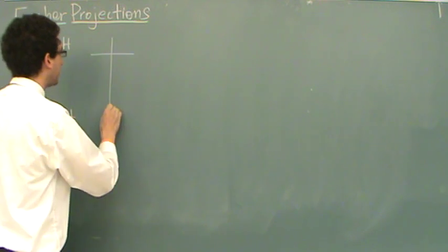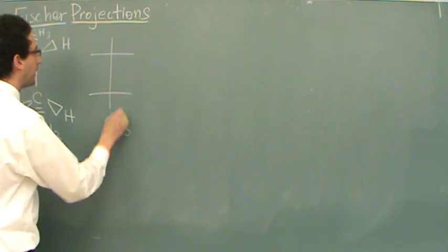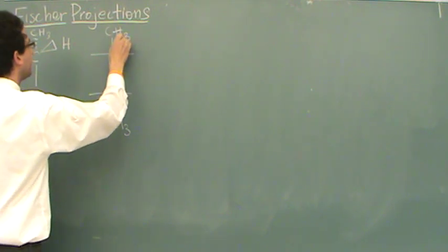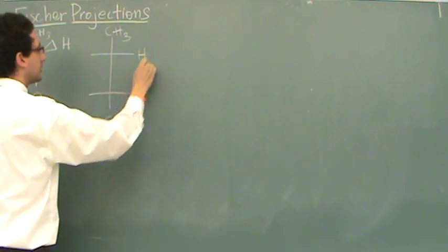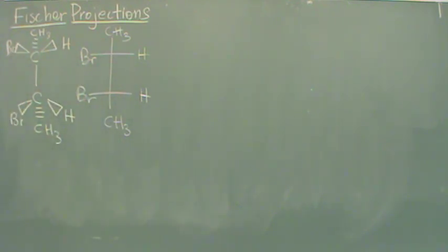So what a Fischer projection does is it basically makes your picture look like this. Where here's the methyl at the bottom and the top. You've got the H's on the right and the Br's on the left. So you can see if I draw it that way how much simpler it is to draw.